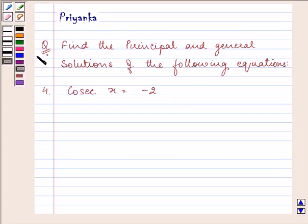Hi and how are you all today? Let us start with the question. It says find the principal and the general solution of the following equation. Now the value of cosec x is given to us as minus 2.